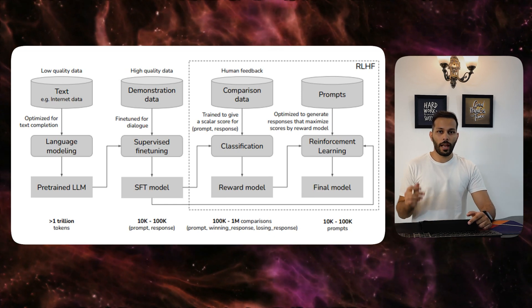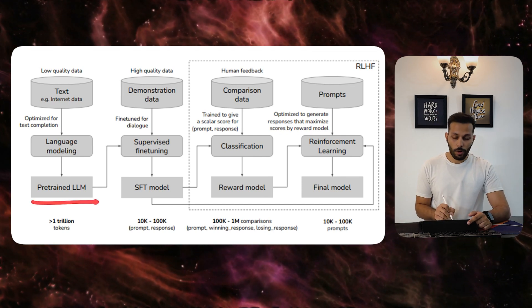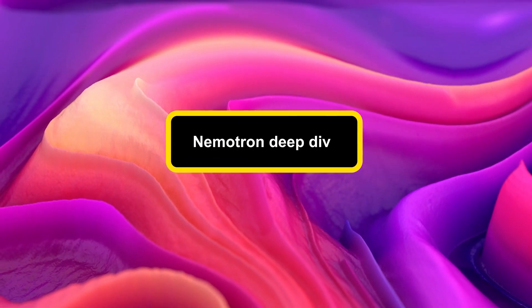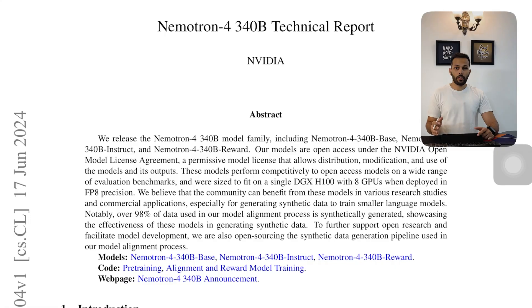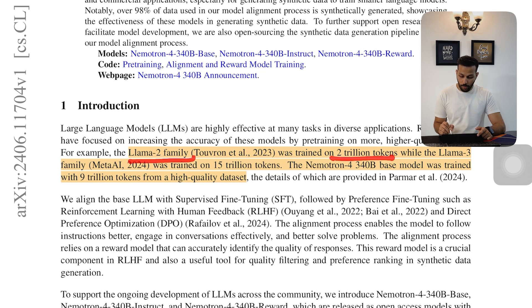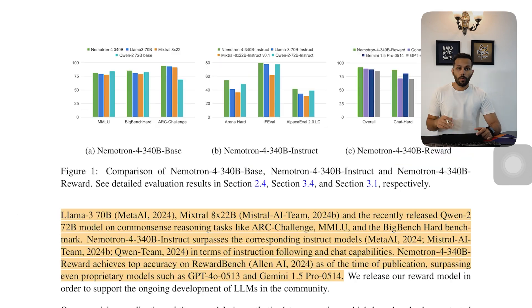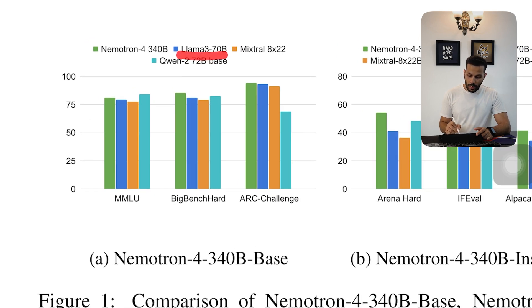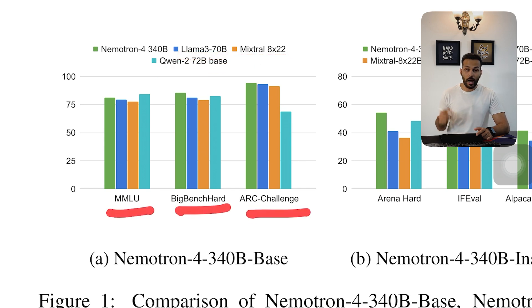NVIDIA has released all three models from this process: the base model, the reward model, and the final instruction-tuned model. The base model is trained on 9 trillion tokens. For comparison, Llama 2 was trained with 2 trillion tokens, Llama 3 with 15 trillion tokens, and ChatGPT was allegedly trained on 13 trillion tokens. NVIDIA shows that the Nemotron 4 base model outperforms open-source models such as Llama 3, Mixtral, and Qwen on benchmarks such as MMLU, BigBench Hard, and ARC Challenge.